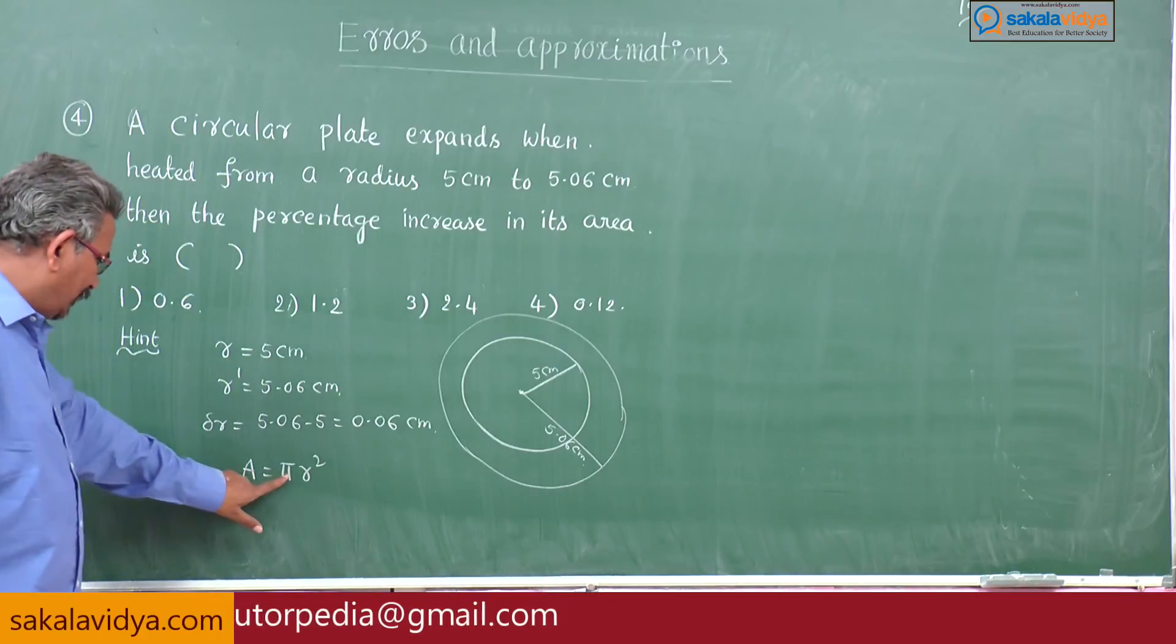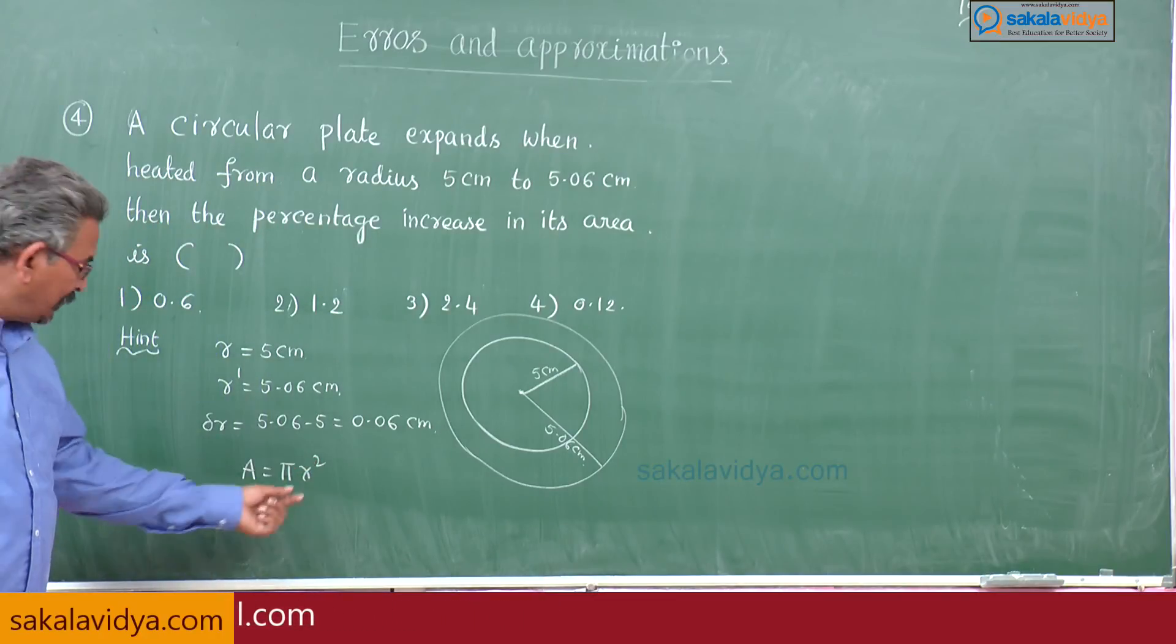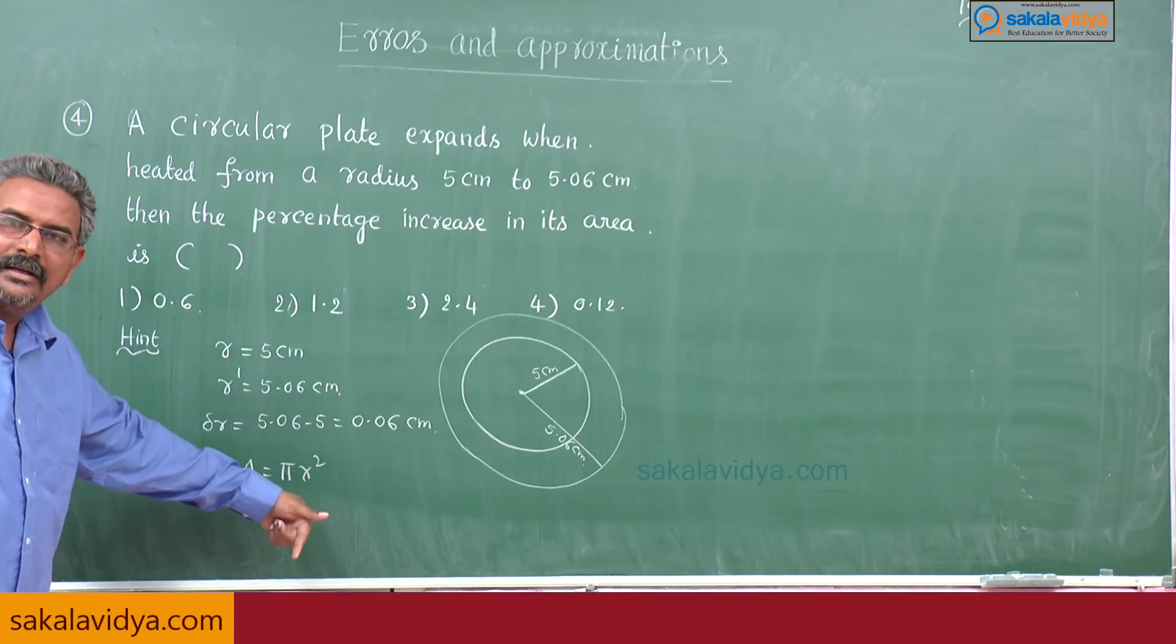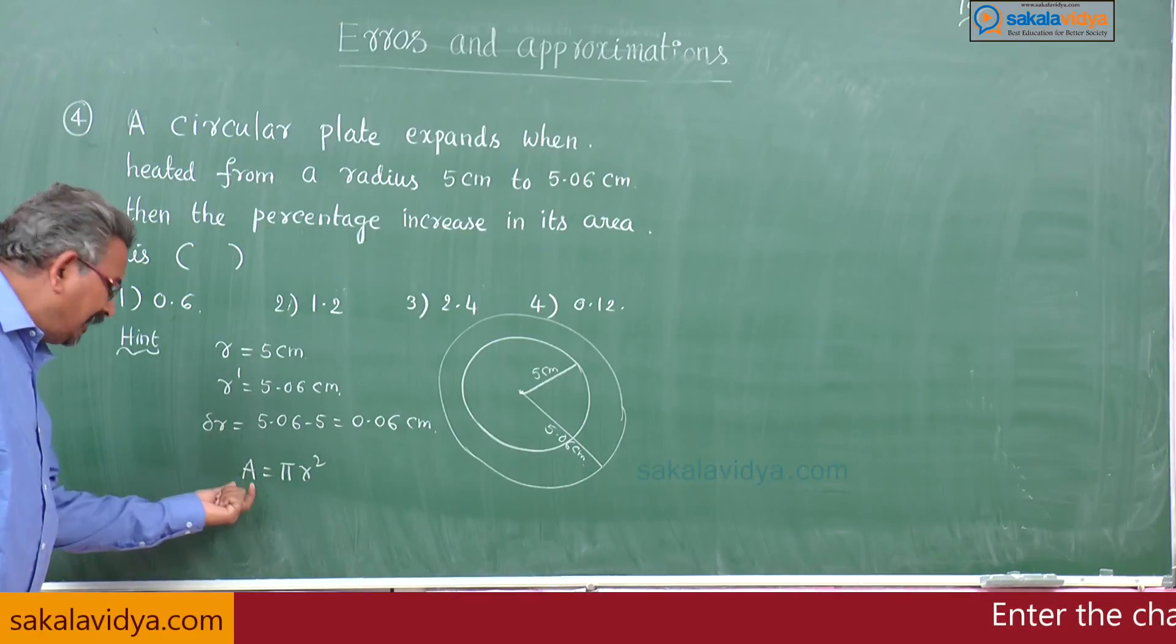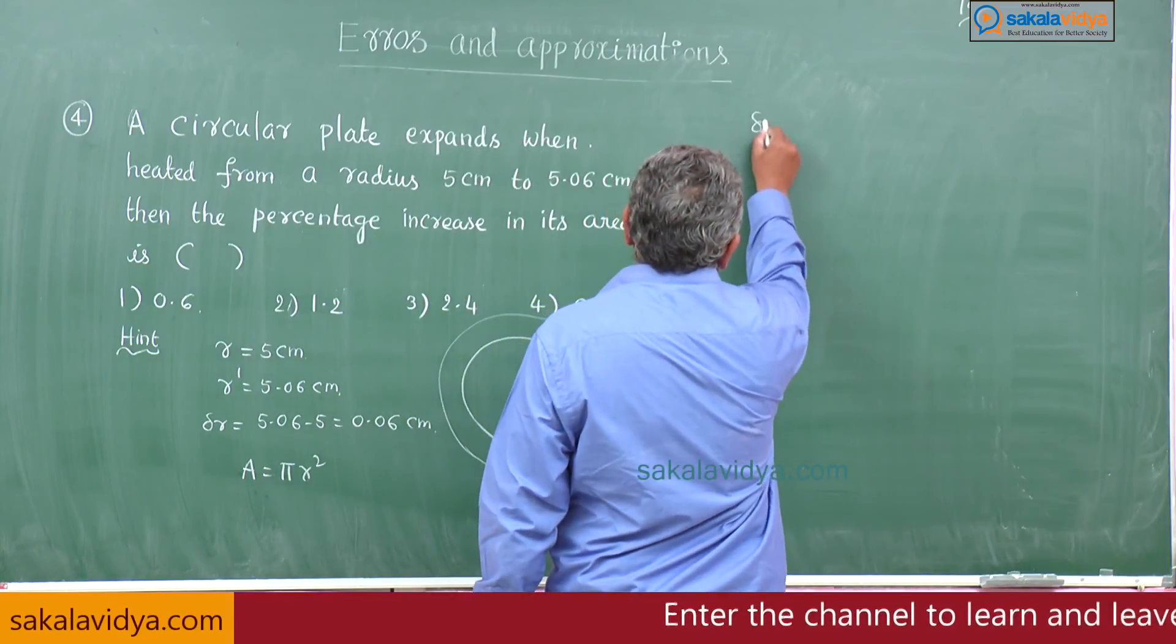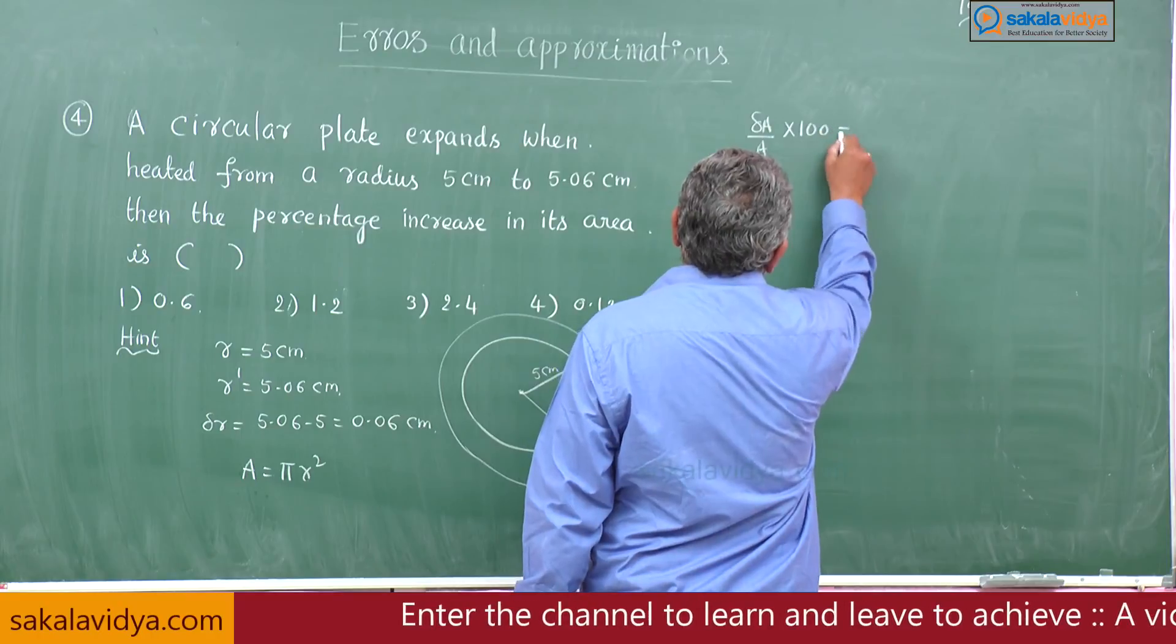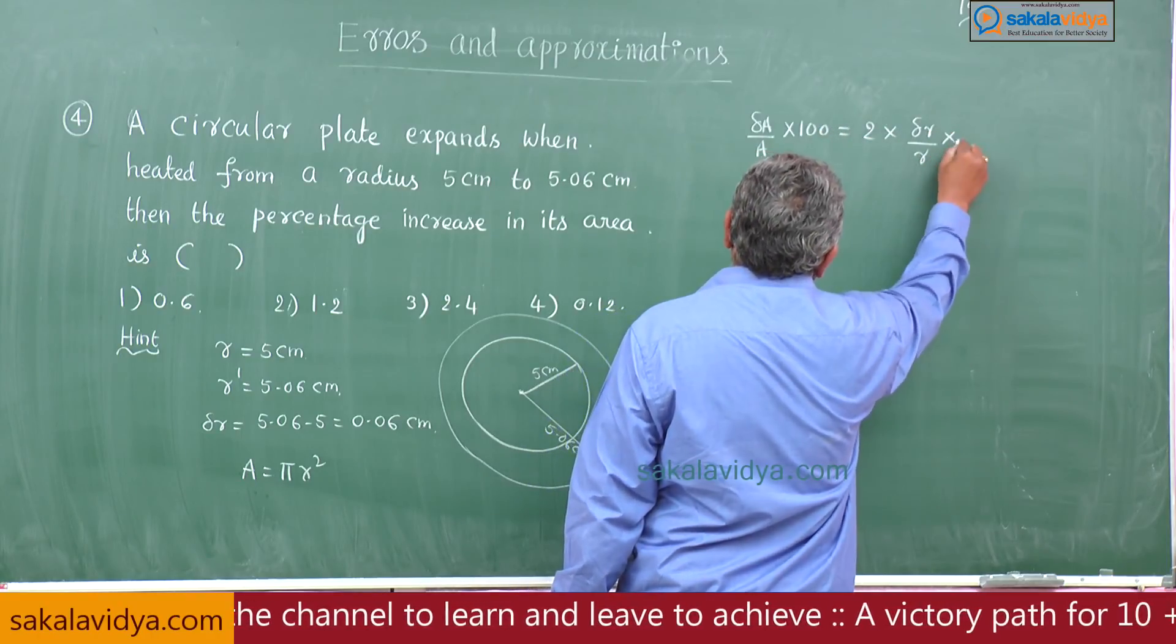Directly, whenever a is equal to pi r square, means here pi is constant, r raised to how much power? That is 2. That is dimension of r. Dimension of r is 2. That means the percentage error in area directly we can write delta a by a into 100 is equal to 2 times delta r by r into 100. That's all. The problem will be solved.